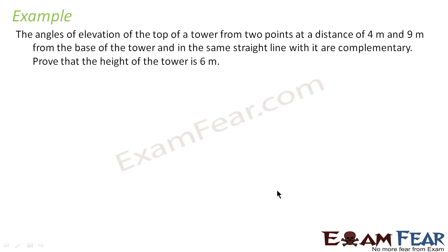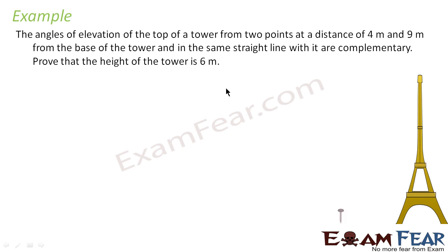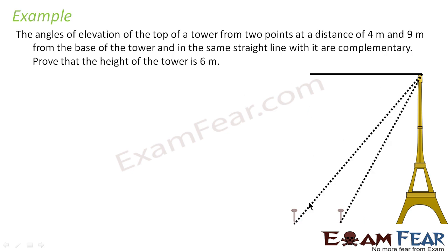Let's take one more, the last problem. The angle of elevation of the top of a tower from two points at distances 4 and 9 meters from the base of the tower on the same straight line are complementary — meaning if one angle is θ, the other is 90° − θ. We have to prove that the height of the tower is 6 meters.